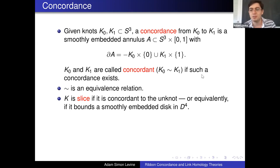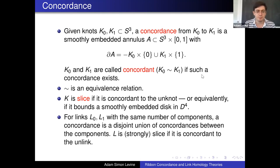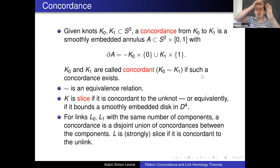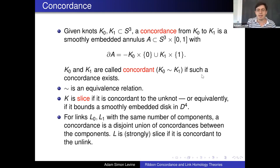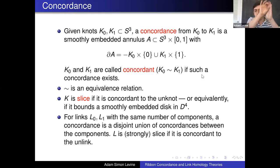The question of classifying knots up to concordance — there's a group structure on the set of knots — is a hugely rich subject studied by many people. You can define the same notion for links: two links are concordant if they have the same number of components and you can find simultaneous concordances between the components of one link and the components of the other, disjoint as embedded in four dimensions. You can think of it as a disjoint union of concordances, where each component must be an annulus.